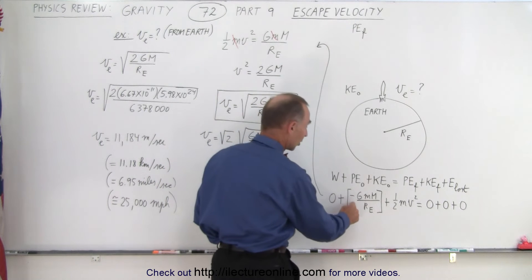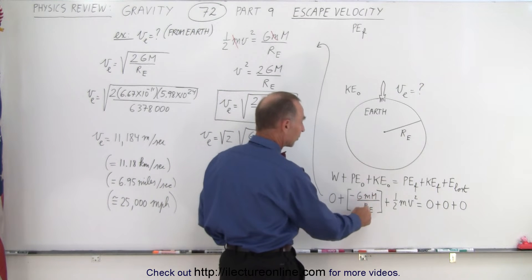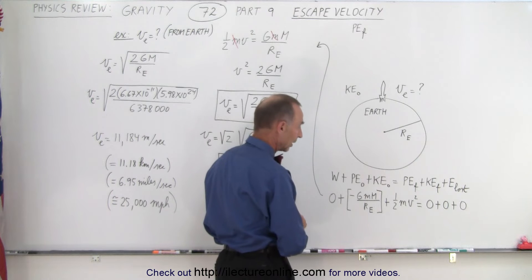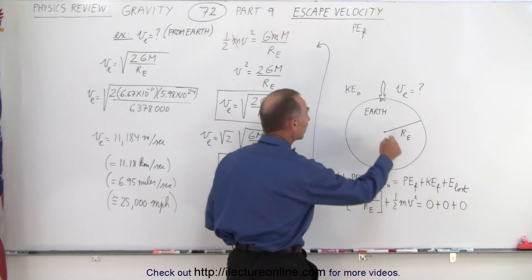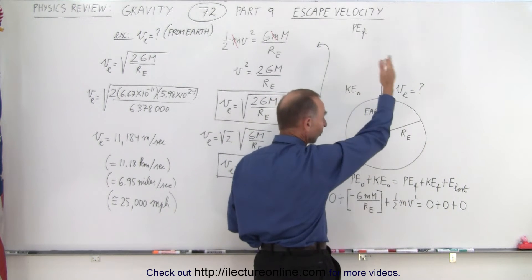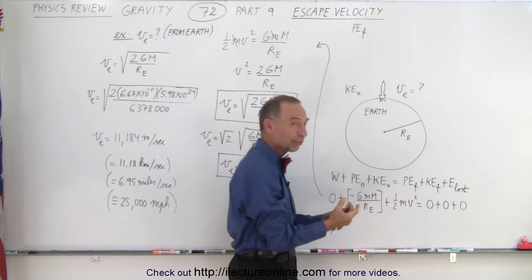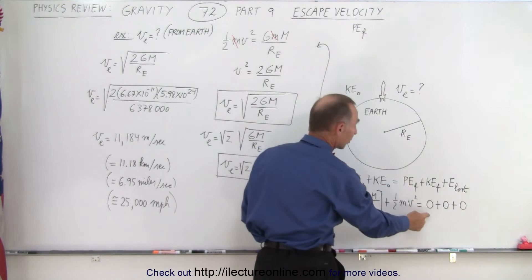Of course on the surface of the Earth the potential energy is minus GM times m divided by the radius of the Earth. On the right side when we finally reach very far distance away from the Earth where there's no longer the pull of gravity potential energy will be zero.